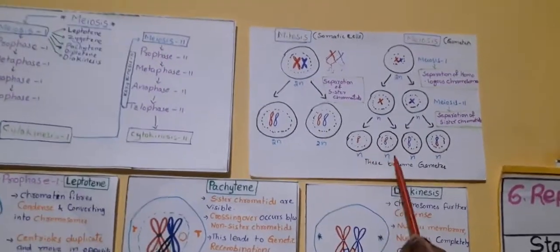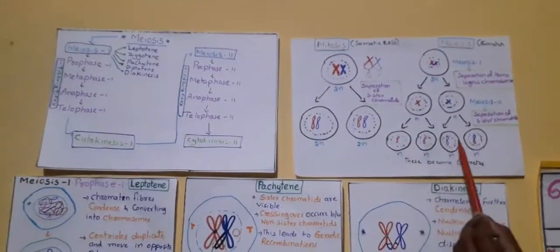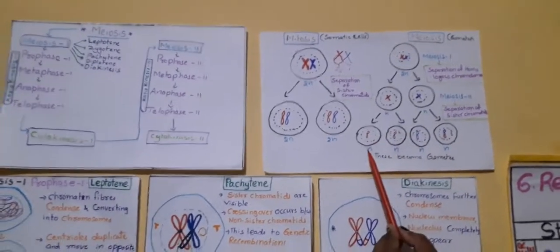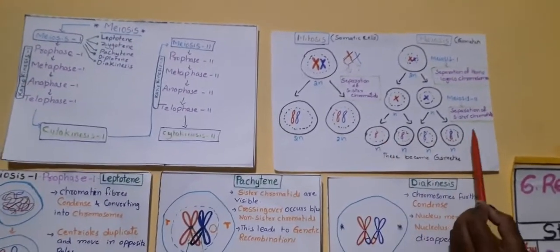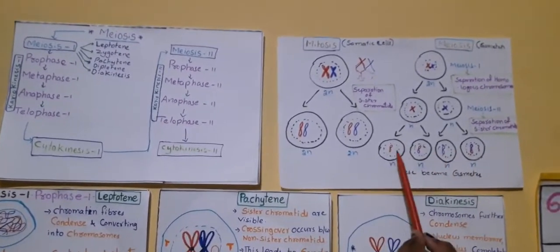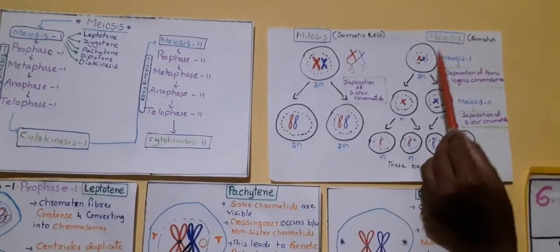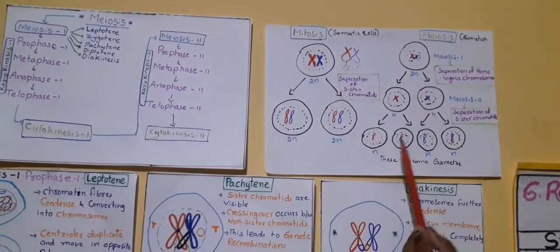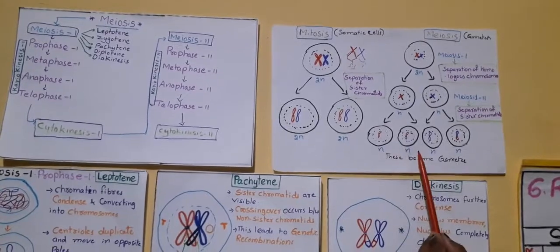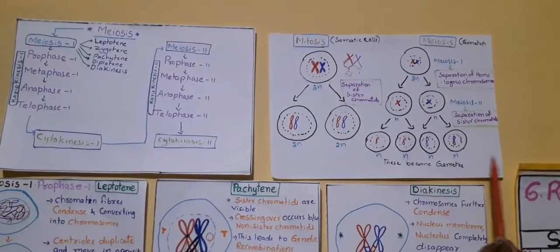Finally, in the process of meiosis, four daughter cells are formed. They are in haploid state — they consist of a single set of chromosomes (N). These four daughter cells will become gametes. Starting with a diploid parent cell (2N), meiosis forms four haploid daughter cells (N).